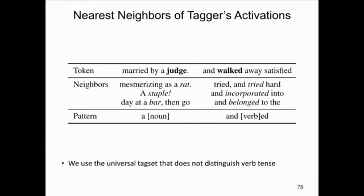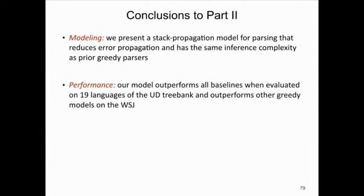Examining nearest neighbors of tagger hidden layer activations: in one example, the activations for 'judge' have nearest neighbors all with the noun pattern. In another, activations capture the pattern of words ending with '-ed,' even though the universal tag set doesn't distinguish word tense. The learned representations encode not only POS tag information but also other syntactic patterns. In summary, the stack propagation model reduces error propagation while maintaining the same inference complexity as previous greedy parsers, outperforming all baselines on the universal dependency treebank and other greedy models on Wall Street Journal.